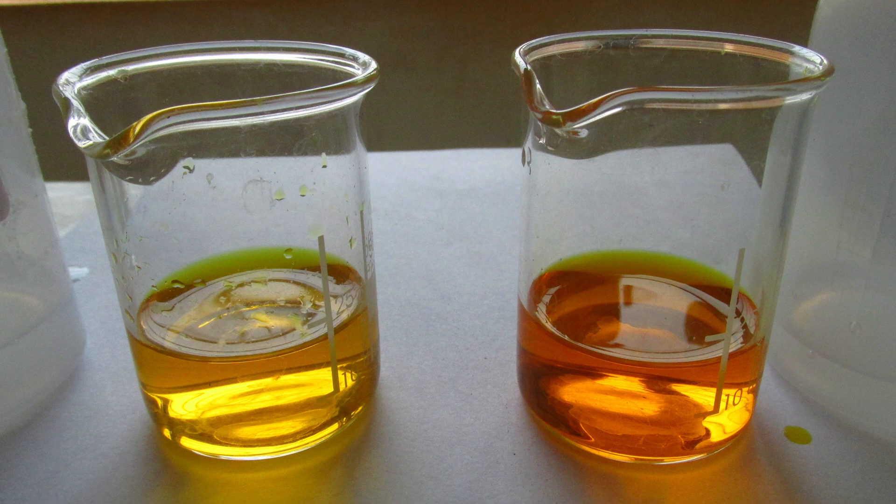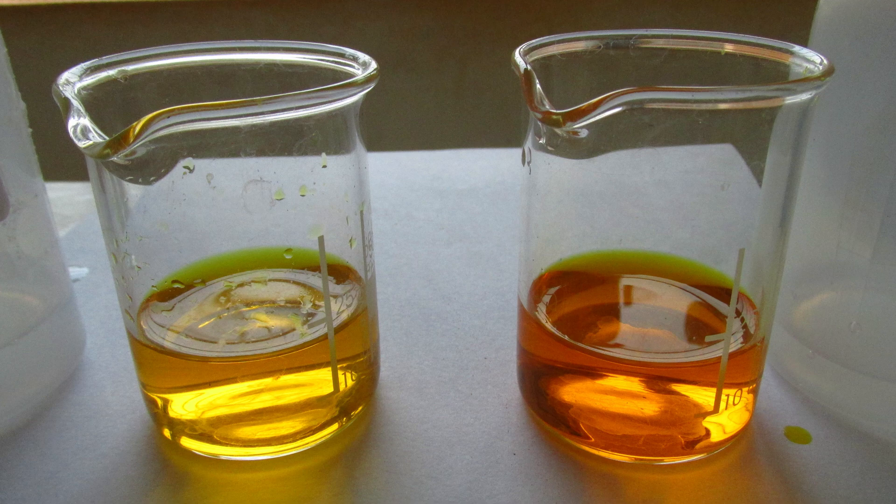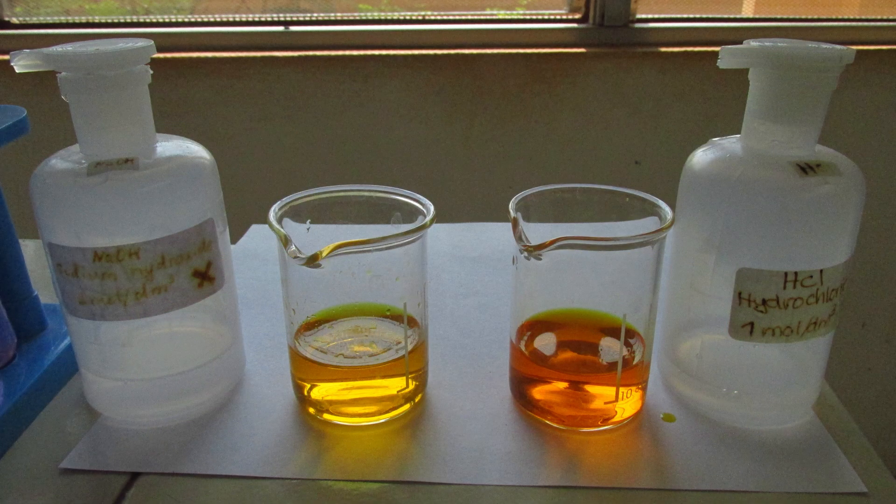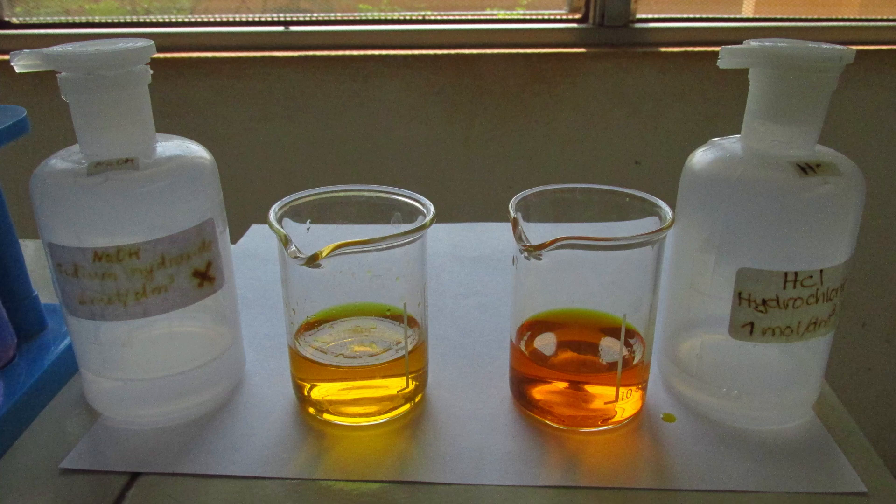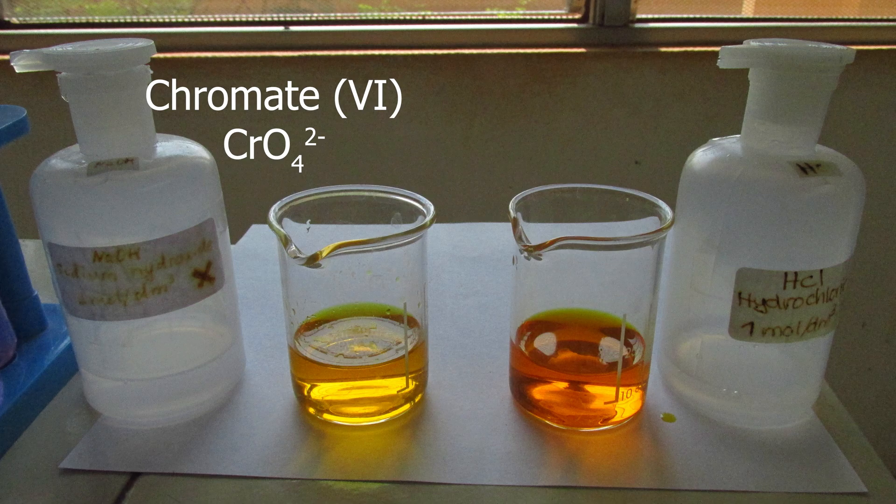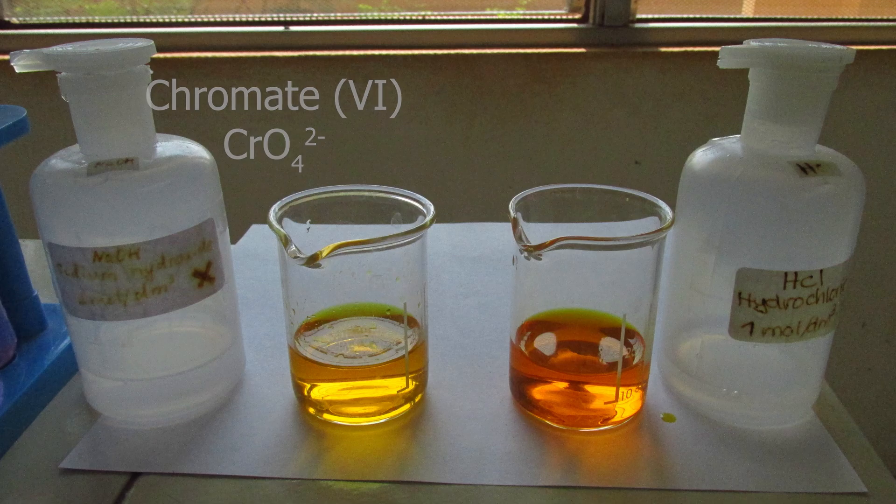Here on the right, I added hydrochloric acid to potassium dichromate 6. And on the left, I added sodium hydroxide. You see, potassium dichromate changes into something yellow. Yellow color is due to ions of chromate 6. Here is the formula, chromate 6. So the reaction is reversible. I add acid, I change chromate 6 into dichromate 6.